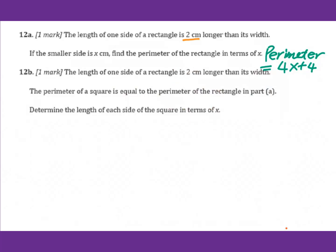Let's go to 12b. The length of one side of a rectangle is 2 cm longer than its width. The perimeter of a square is equal to the perimeter of the rectangle in part a. Determine the length of each side of the square in terms of x.